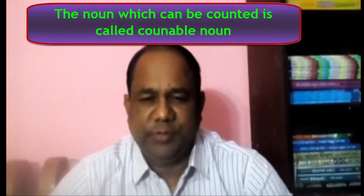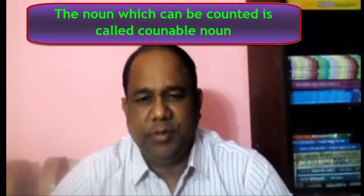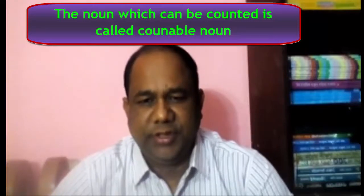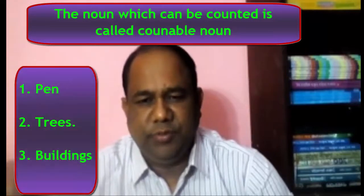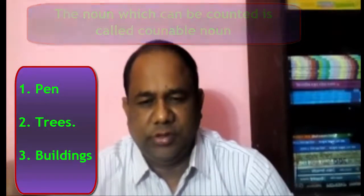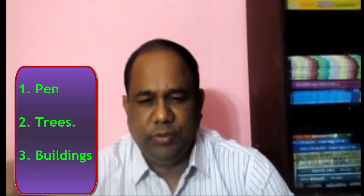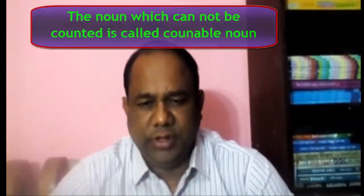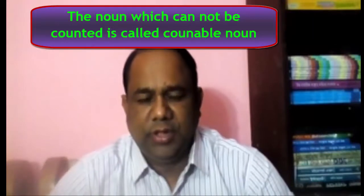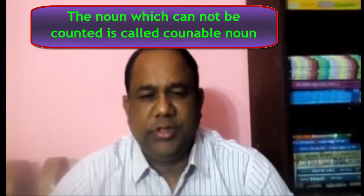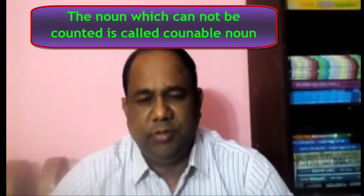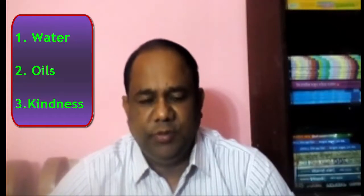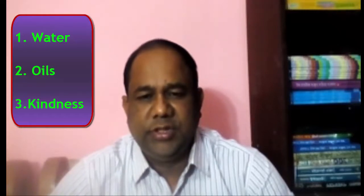The noun which can be counted is called a countable noun — for example, pen, cheese, building. The noun which cannot be counted is called an uncountable noun — for example, water, well, kindness. Thank you, goodbye.